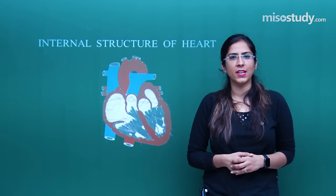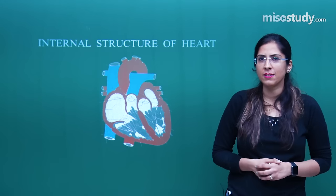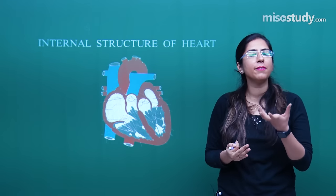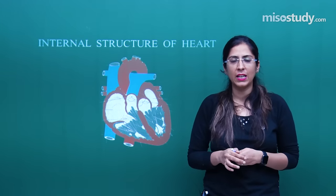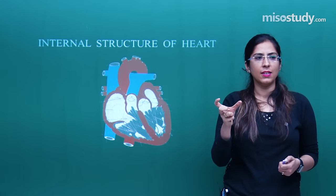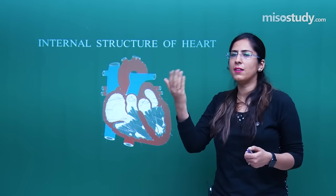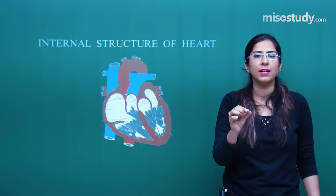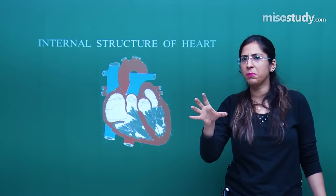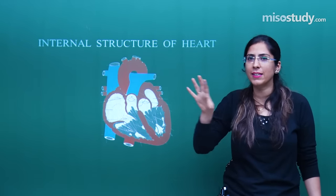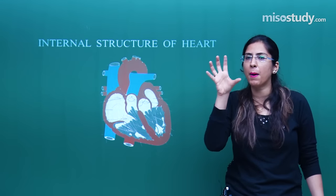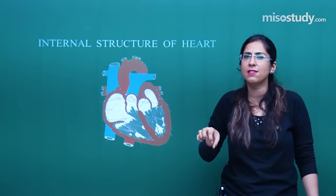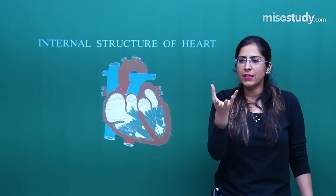Hello students, welcome to Meso Study. In today's live online session, we will be discussing how our heart looks, what the structure of the heart is, and what the different arteries and veins present in it are. Heart is a word we normally use in day-to-day life — someone says 'my heart is broken,' but actually this is quite different. After this session of 30 to 40 minutes, you will realize there is quite a difference between what we perceive and what the heart actually is. Heart is just a pumping organ — a very vital organ that pumps blood to the various organs, structures, and cells of the body.